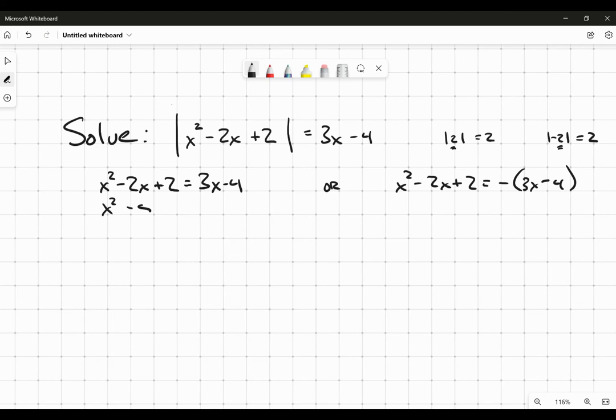I'll bring over that 3x and bring over that 4. So I get x squared minus 5x plus 6 equals zero. The nice thing is this factors fairly nicely.